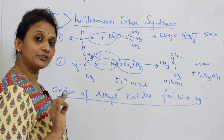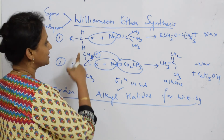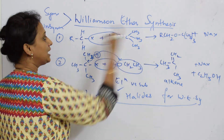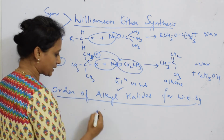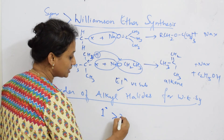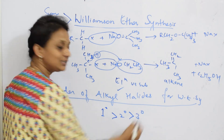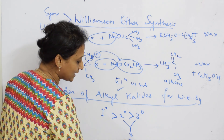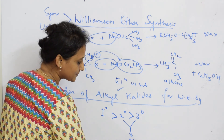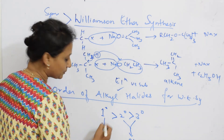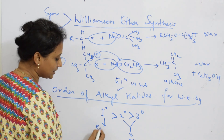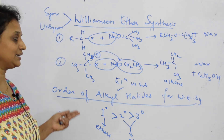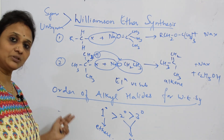So what is the order of alkyl halides for Williamson Ether Synthesis? To prepare ethers, the order is: primary is most preferred, then secondary, then tertiary. If you pick secondary or tertiary alkyl halides, you will get alkenes. Only primary alkyl halides reliably give ethers. Remember this — I will come back with one more example.